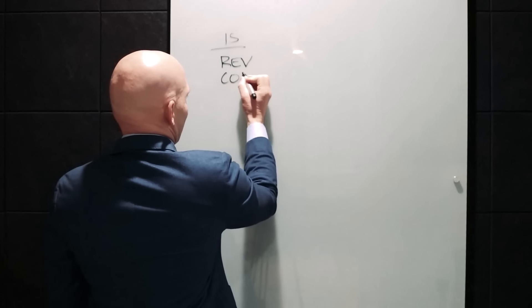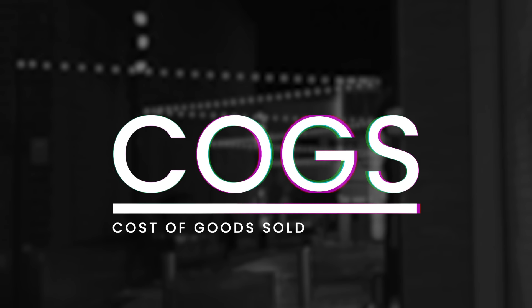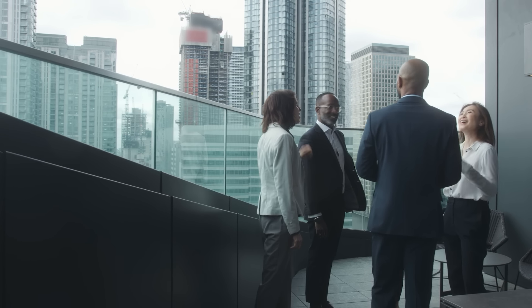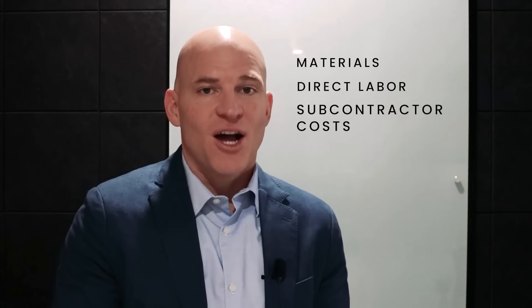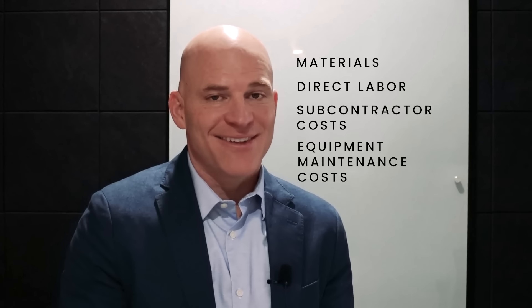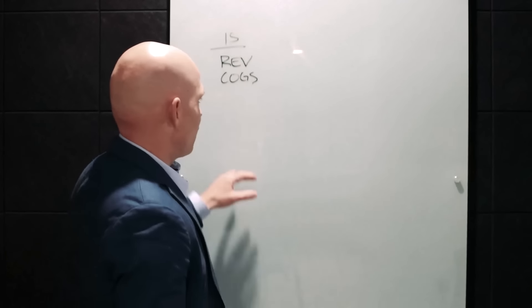Now underneath revenue, we have COGS, which is just short for cost of goods sold, also known as cost of revenue. These are all the costs associated with producing and delivering products into the hands of customers. It may include accounts such as materials, direct labor, subcontractor costs, equipment maintenance costs—not the cost of the equipment, but the cost to maintain the equipment that is producing the product or service—and other indirect or direct costs associated with generating revenue.